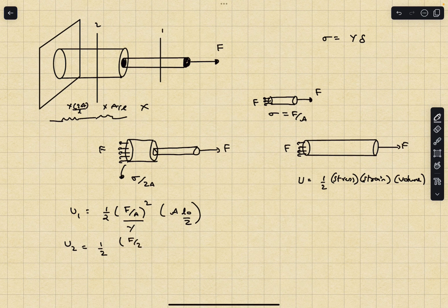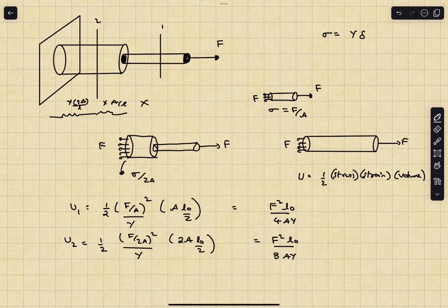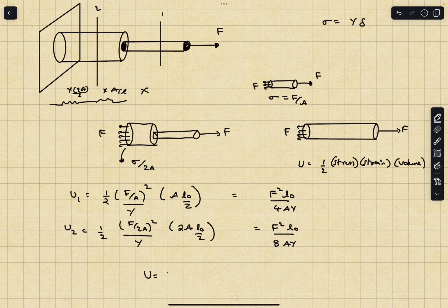Now let's write down U2 as well. In the U2 case the stress is F by 2A. So it'll be F by 2A squared divided by Y times the area is now 2A times L0 by 2. After solving you get the respective answers and the final answer for the stored elastic potential energy is U1 plus U2, which is 3 by 8 F square L0 divided by AY.